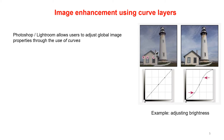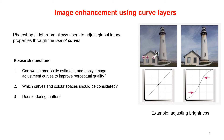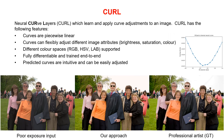We're also interested to work in multiple color spaces. This naturally led to three research questions. First, can we automatically estimate and apply image enhancement curves to improve perceptual quality? Which curves and color spaces should be considered? And does ordering matter? Our method, called CURL, answers these questions.